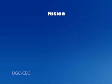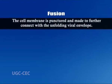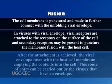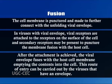The second route is fusion. In this, the cell membrane is punctured and made to further connect with the unfolding viral envelope. In enveloped viruses, viral receptors attach to receptors on the surface of the cell, and secondary receptors may be present to facilitate membrane fusion with the host cell. After attachment is achieved, the viral envelope fuses with the host cell membrane, emptying the contents into the cell. This route of entry is carried out by viruses that have an envelope.